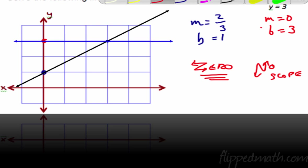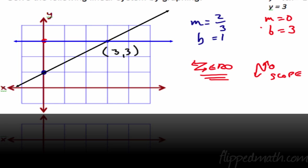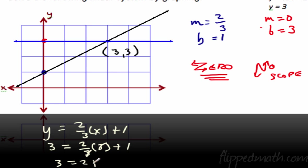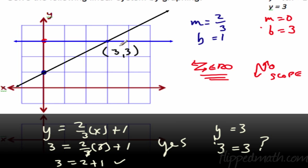We have one point of intersection right here. Which point is this? It's 1, 2, 3 up — so it's the point (3, 3). Now we need to check this. Plug a 3 in for x and 3 for y into the first equation: is 3 equal to 2/3 times 3 plus 1? The 3s cancel, giving 3 equals 2 plus 1, which is 3 equals 3. That works. The other equation is simply y equals 3 — does 3 equal 3? Yes. So the solution is (3, 3).